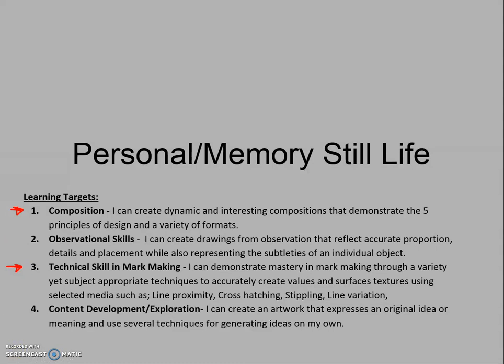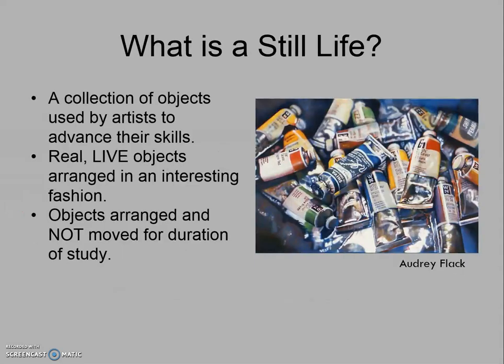So first things first — what is a still life? A still life is a collection of objects that artists use to advance their skills. Something that needs to be stressed is that these are real, live objects. They're not objects taken from a picture, and it isn't things from imagination — it is actually objects sitting in front of us that we look at. They're typically arranged in an interesting fashion so as to challenge us, but also to help convey and further our ideas.